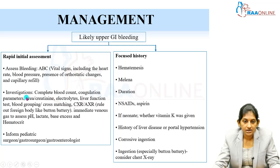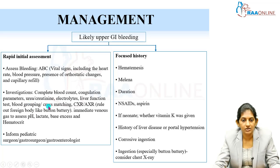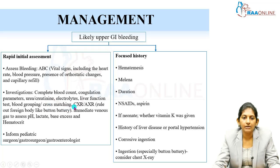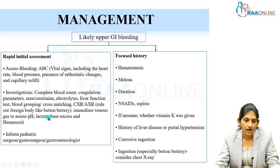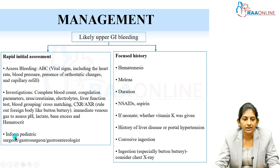Then investigate. First investigations: CBC, a full coagulogram, RFT, LFT, and send blood for grouping and cross-matching. Further investigations in the emergency room: chest X-ray and abdominal X-ray to rule out foreign bodies like a button battery. Do an ABG — arterial blood gas, or venous blood gas if not available — and assess pH and lactate level. While doing the initial assessment and resuscitation, inform the pediatric gastroenterologist or pediatric surgeon at your hospital.